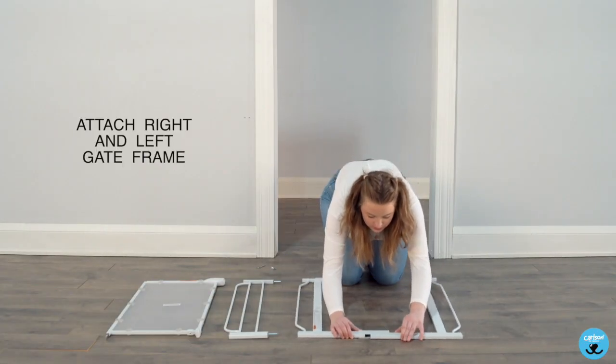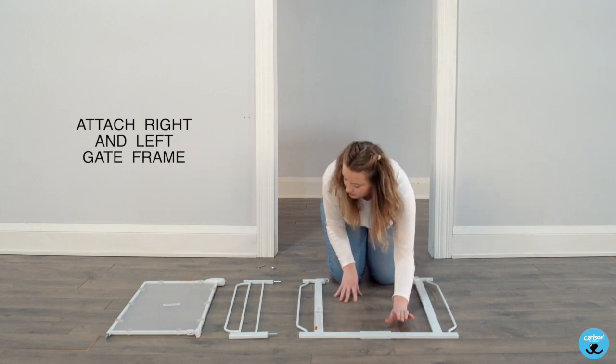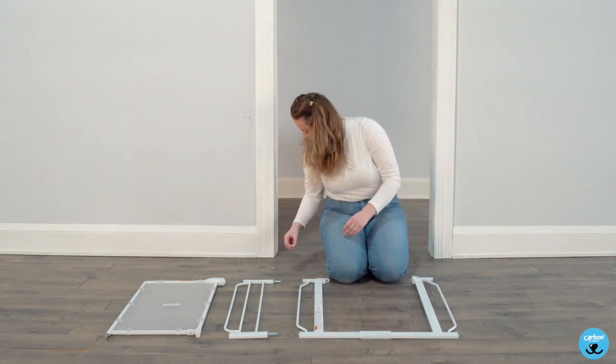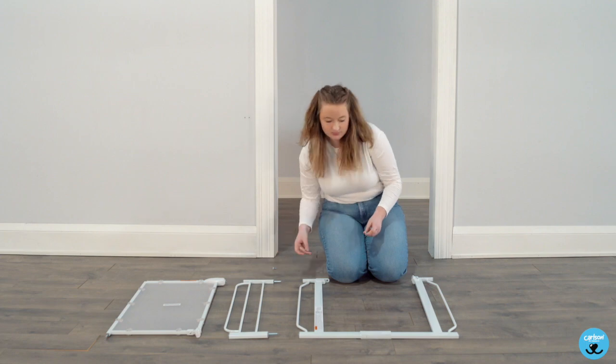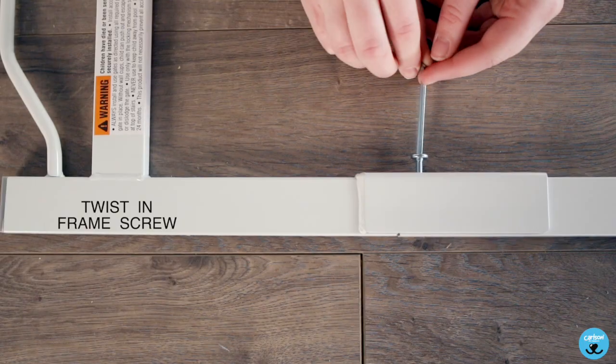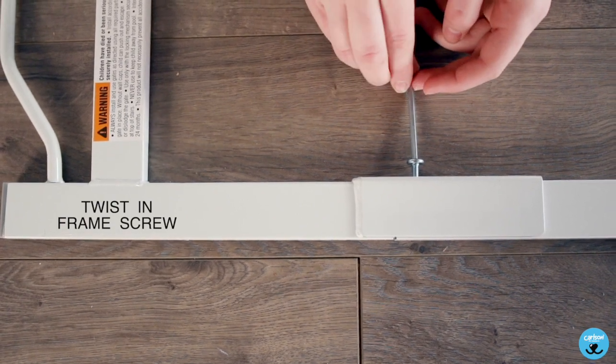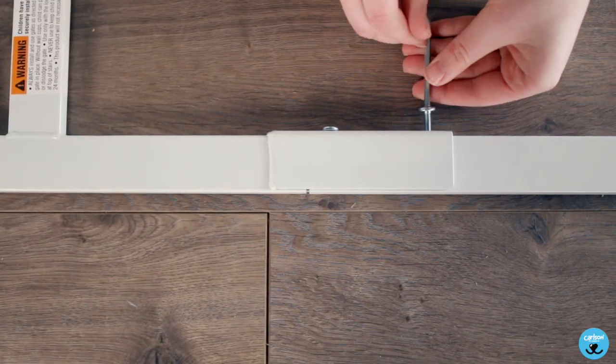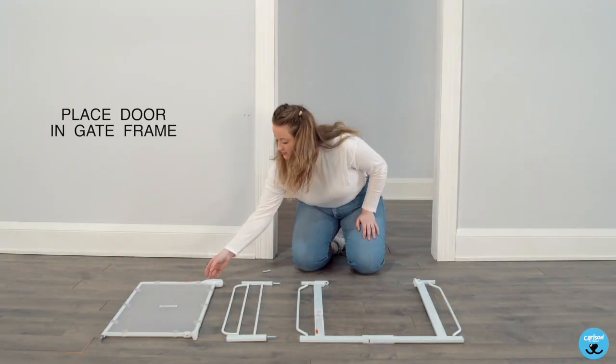Attach right and left gate frame. Twist in frame screw. Place door and gate frame.